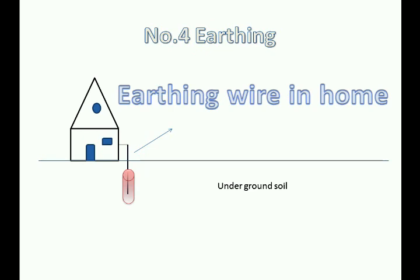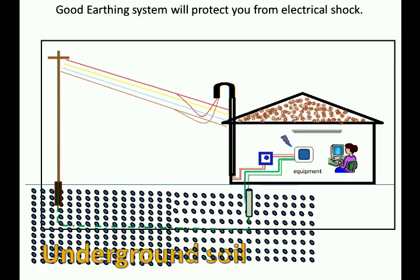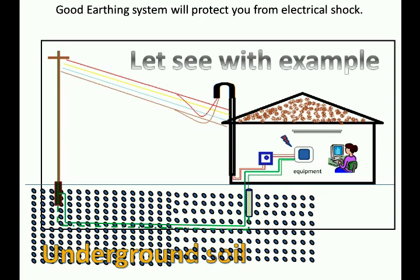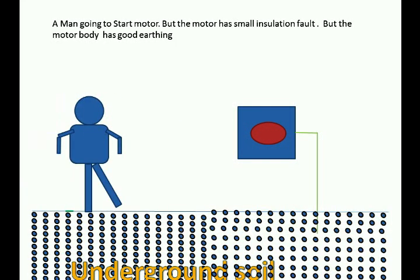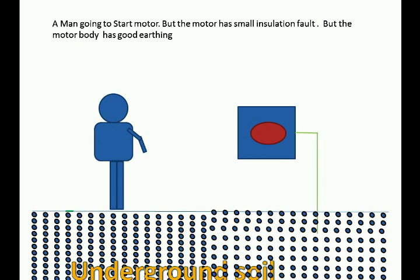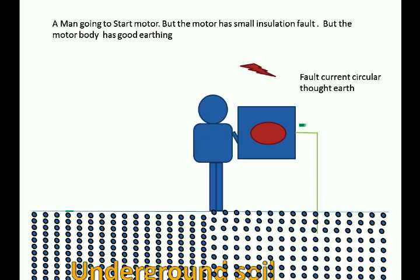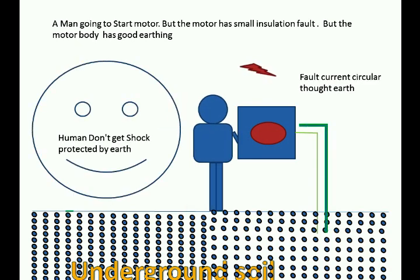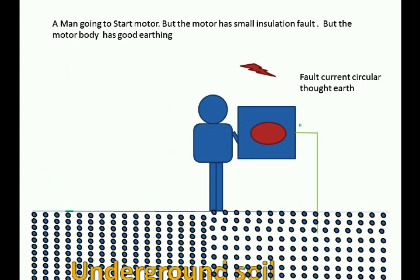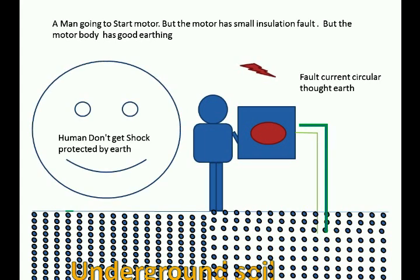Number 4: Earthing. It is very important. The earthing system will protect you from electrical shock. When any of your equipment has a fault or leakage current, this current is carried away by the earth system. A good earthing system works because current always chooses the path of least resistance. For example, consider a motor with a small insulation fault but with a good body earth connection. When started, the fault current will choose the earth wire to flow through rather than your body, since the earth wire is a good conductor. The man is protected from the fault current by the earthing system.